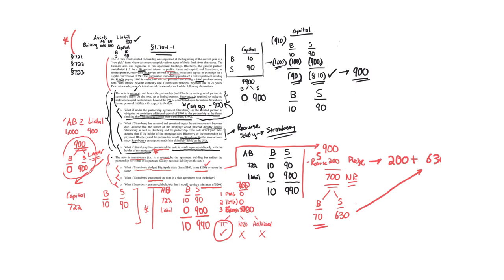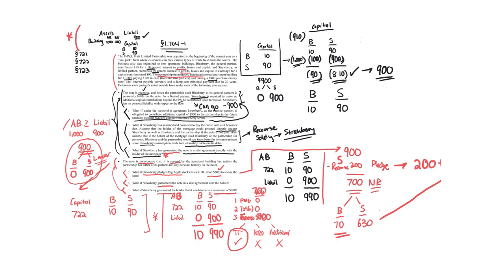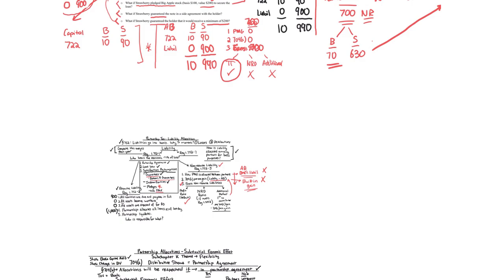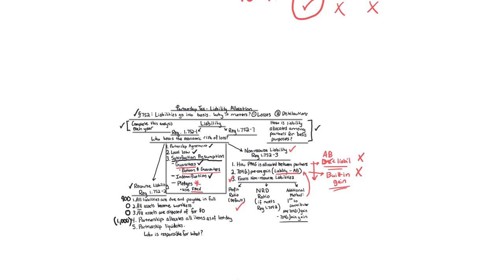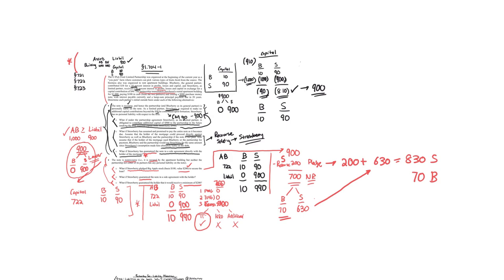We've gone through a lot of material here — the main situations involving liability issues: guarantees, pledges, recourse versus non-recourse, and how to apply the Section 752 rules along with the substantial economic effect rules and the non-recourse deduction rules. You can see how everything fits into place. All these rules from Section 704, non-recourse deductions, substantial economic effect, and Section 752 all come together in this analysis. Please watch the other videos on this topic as well as the other partnership tax videos provided.